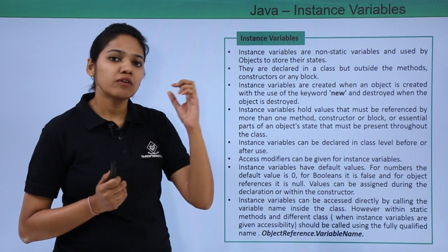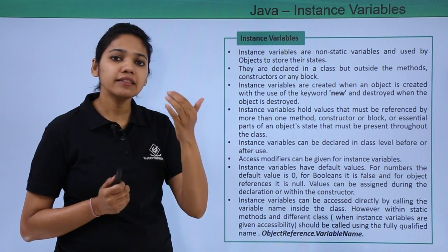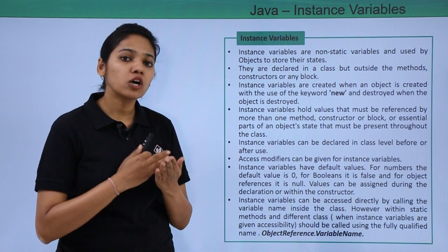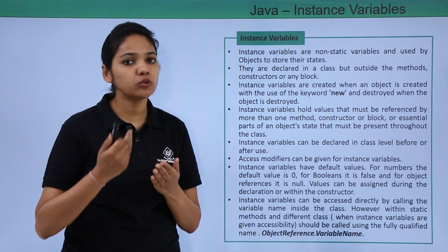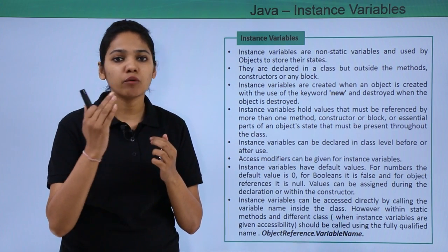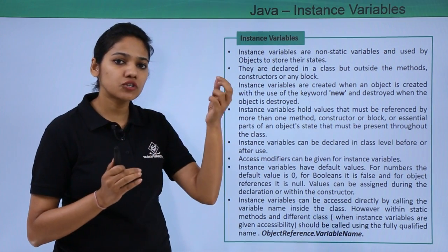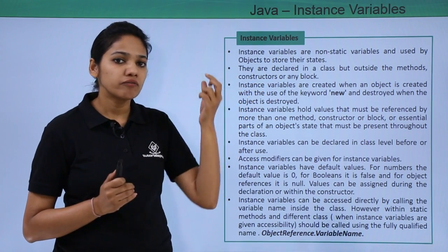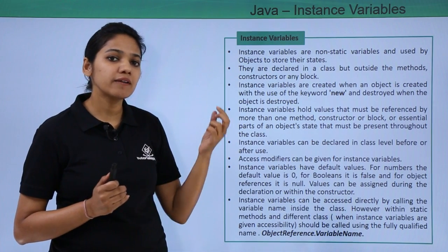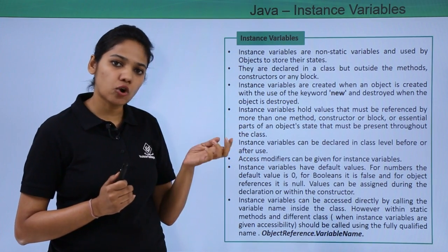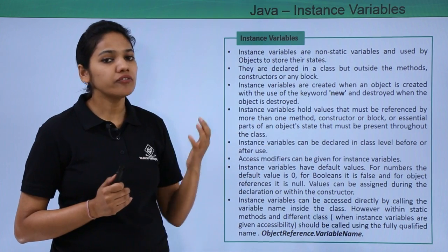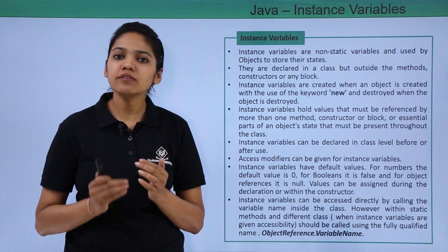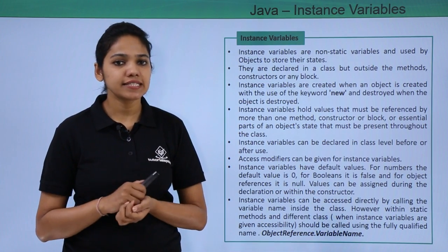Let us take a real-time example: a class being a human and the methods being sleeping, walking, and so on. What are the common variables that can be used across these methods? It may be the name of a human, so we create a variable called String name. Every time we call these methods we say: if the sleeping method is called, print the value of name; if the next method is called, use this name and so on.